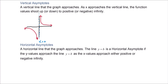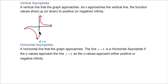As the x values approach 0, the graph shoots down to negative infinity. If we approach from the right — approaching 0 from the right — the graph shoots up to positive infinity. Those two curves will never actually touch or cross the vertical asymptote x equals 0.